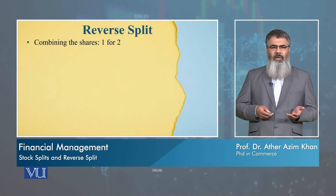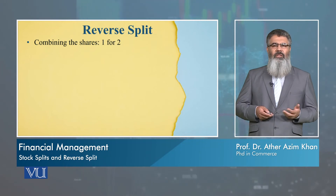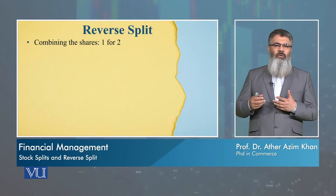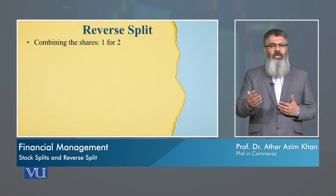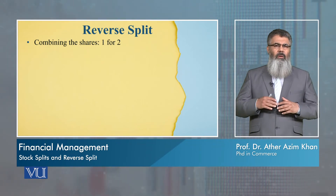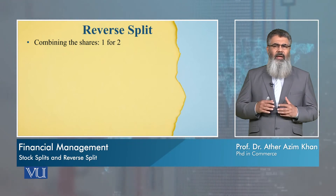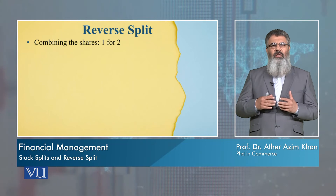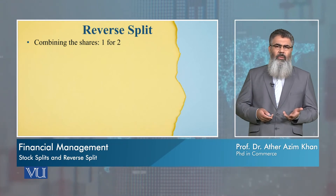If stock split means 2-for-1, then reverse split means 1-for-2. That is, someone who has 2 shares will have those 2 shares taken and be given 1 share in return. And as a rule of thumb, if that happens, the value of that one share will be equal to the value of the original 2 shares.